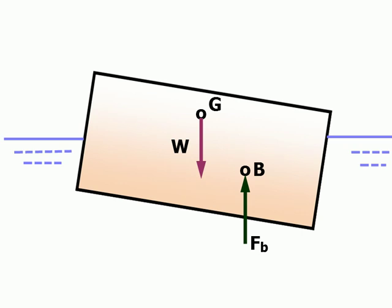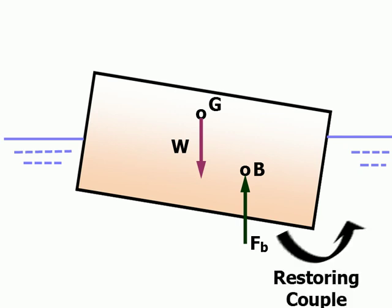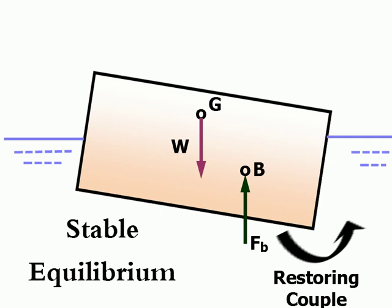It combines with the weight, W, to form a couple which will cause the body to return to its original equilibrium position. This is called stable equilibrium.